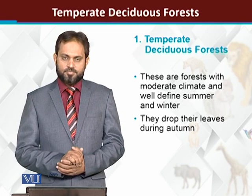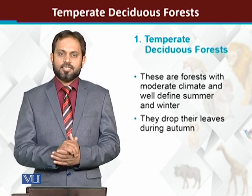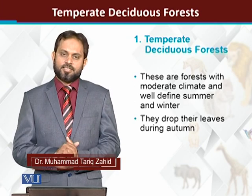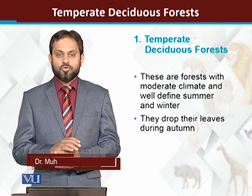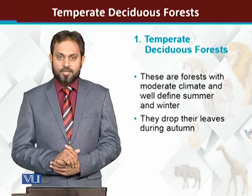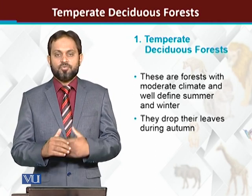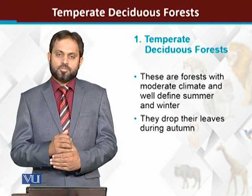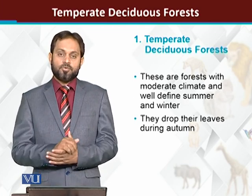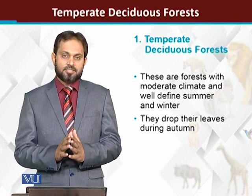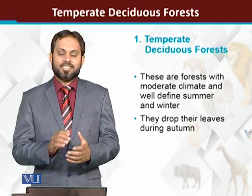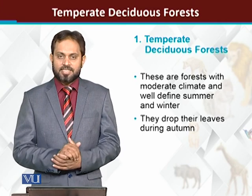Temporary deciduous forest — we call it deciduous forest. These are forests in which plants shed their leaves, unlike evergreen plants which do not shed leaves, and unlike coniferous forests. Deciduous plants have normally distinct seasons. In winter or autumn, leaves fall off; in summer and spring, leaves are present. So temporary deciduous forests are those forests which have plants that shed their leaves during winter and autumn.